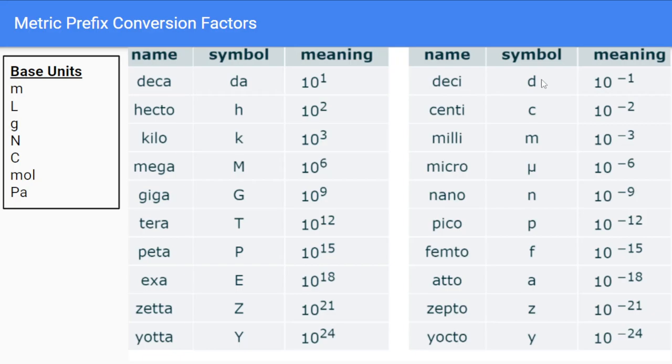But if you compare that to a decagram, one decagram is equal to 10 to the negative 1 grams. So, a decagram is smaller than a gram.